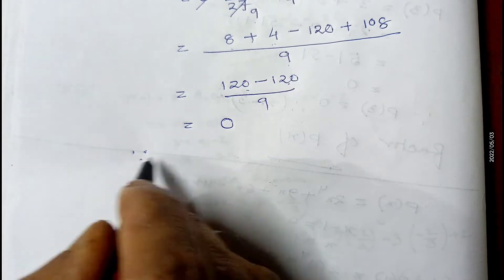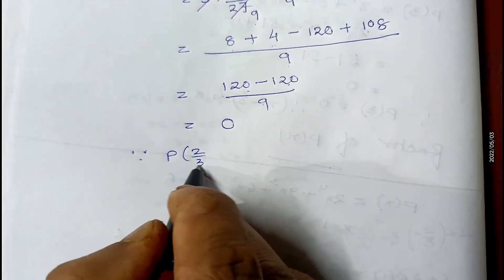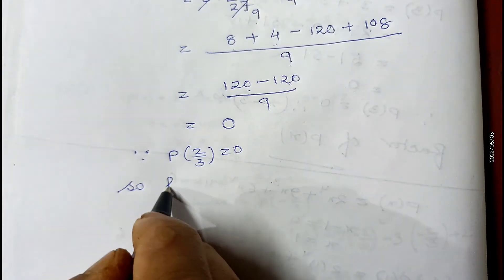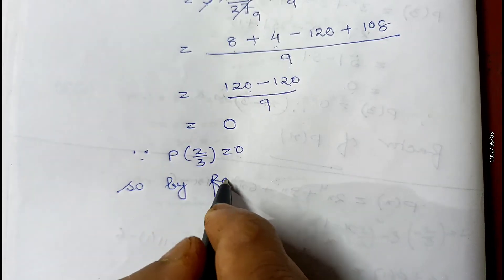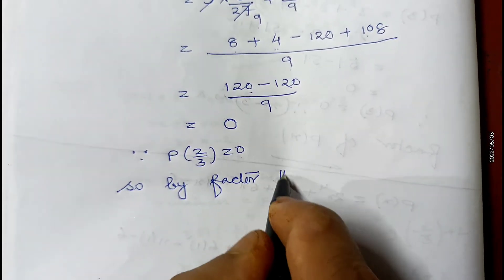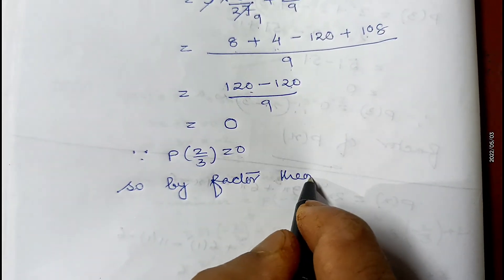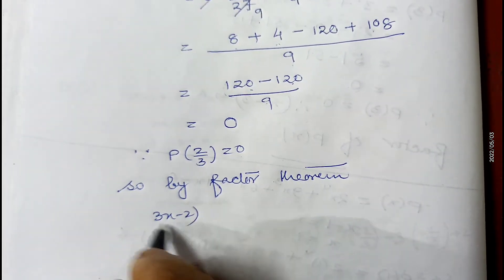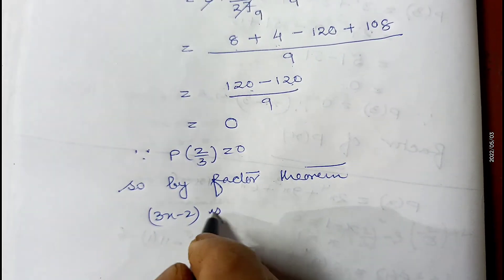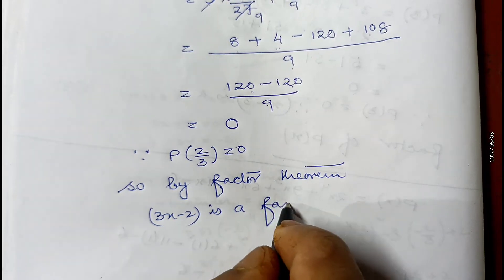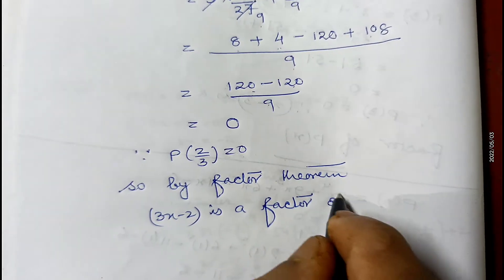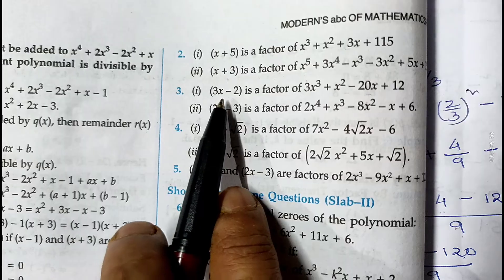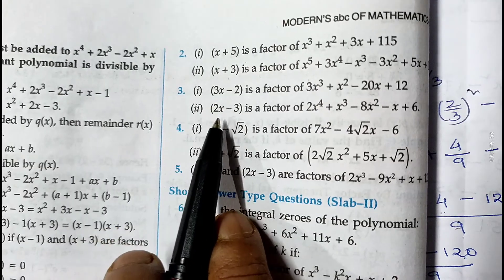Since p(2/3) equals 0, by the factor theorem we can say that 3x minus 2 is a factor of the given polynomial p(x). I hope the first part of question number 3 is clear. The second part is of the same type and you can do it yourself.